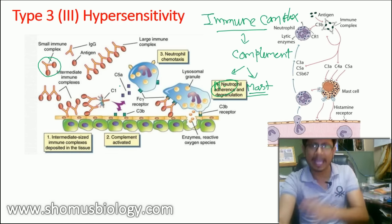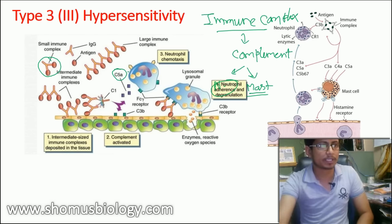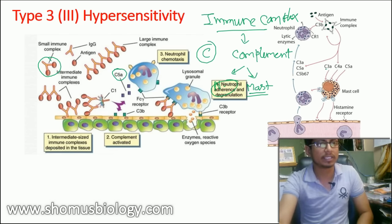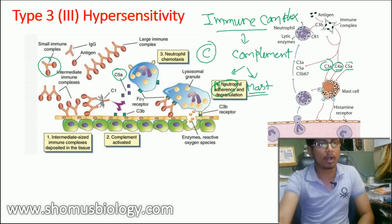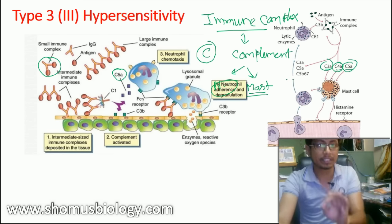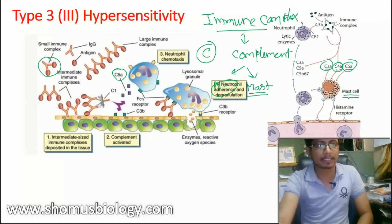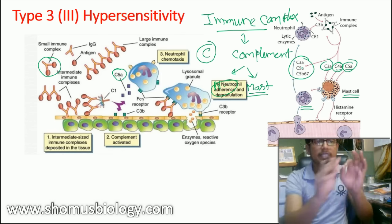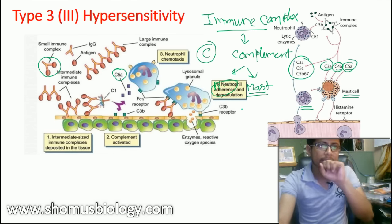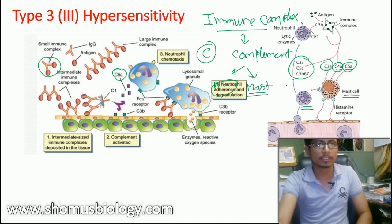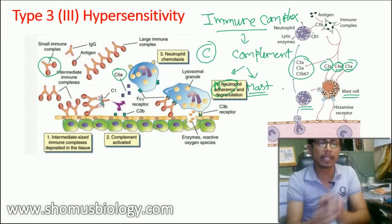The complement proteins are cleaved into 'a' and 'b' parts. The 'a' parts are released and act as anaphylatoxins. These complement fragments — C3a, C4a, and C5a — act as chemical signaling messengers. They can activate mast cells or cause neutrophils to migrate toward the site of release via chemotaxis.